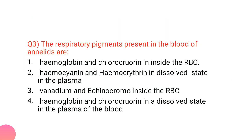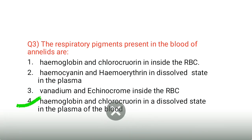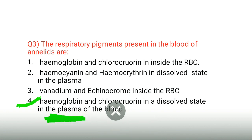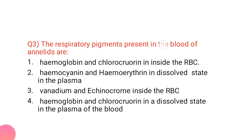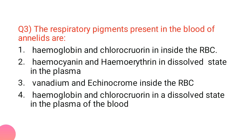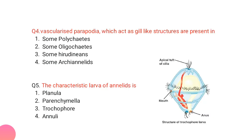The respiratory pigment present in the blood of annelids: unlike us, where hemoglobin is present in RBCs, in annelids hemoglobin and chlorocruorin are present in dissolved form in the plasma of the blood — not in RBCs. This is a very important point: hemoglobin and chlorocruorin are present in dissolved state.